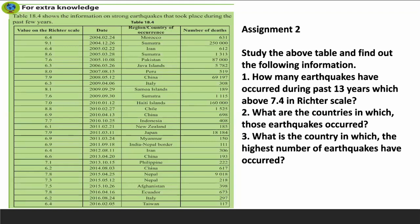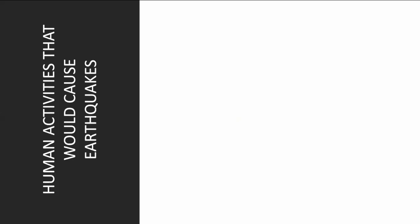A table gives information on strong earthquakes that took place during the past few years. Assignment 2: Study the above table and find out how many earthquakes have occurred during the past 13 years which are above 7.4 on the Richter scale, which countries they occurred in, and which country had the highest number of earthquakes. Recently, scientists have observed that in addition to natural causes, some activities of humans could also cause earthquakes.